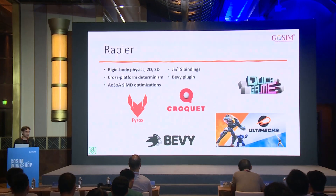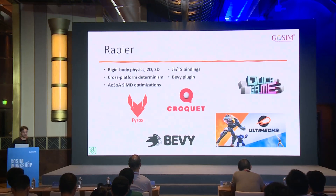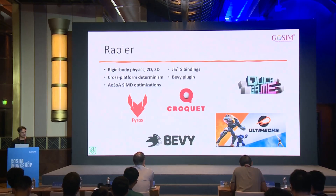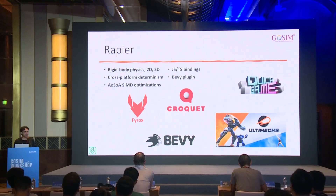Rapier has JavaScript and TypeScript bindings compiled to WebAssembly. It's more than just a raw WebAssembly API — we have automatically generated JavaScript bindings plus manually written layers to provide a more object-oriented and developer-friendly API for JavaScript developers.